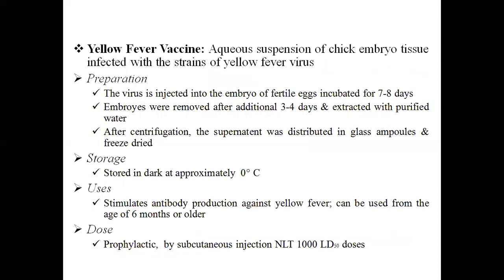Next we are going to discuss yellow fever vaccine. Yellow fever vaccine is a white, slightly yellow or light brown scale of powder. This vaccine is prepared before use by reconstitution of the dried vaccine with normal saline solution. It is an aqueous suspension of chick embryo tissue infected with strains of yellow fever virus which are virulent for mice but still retain immunizing efficiency.